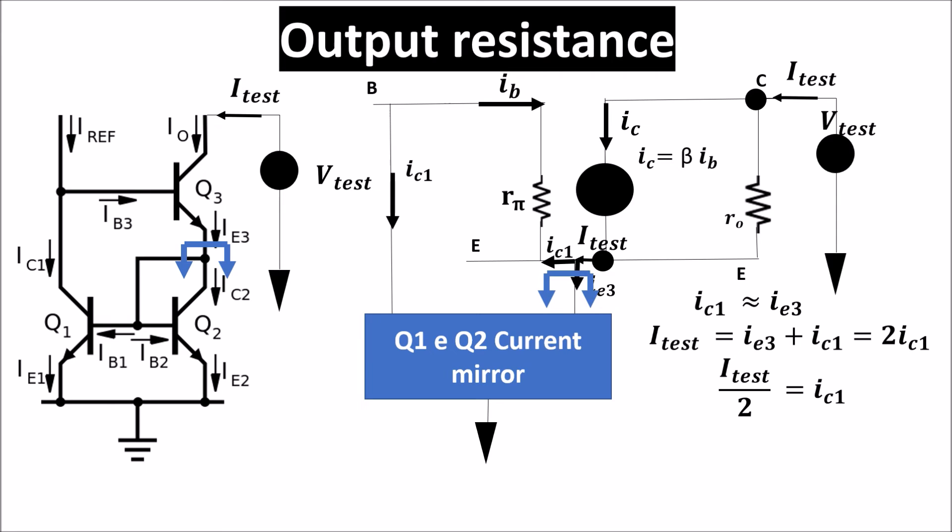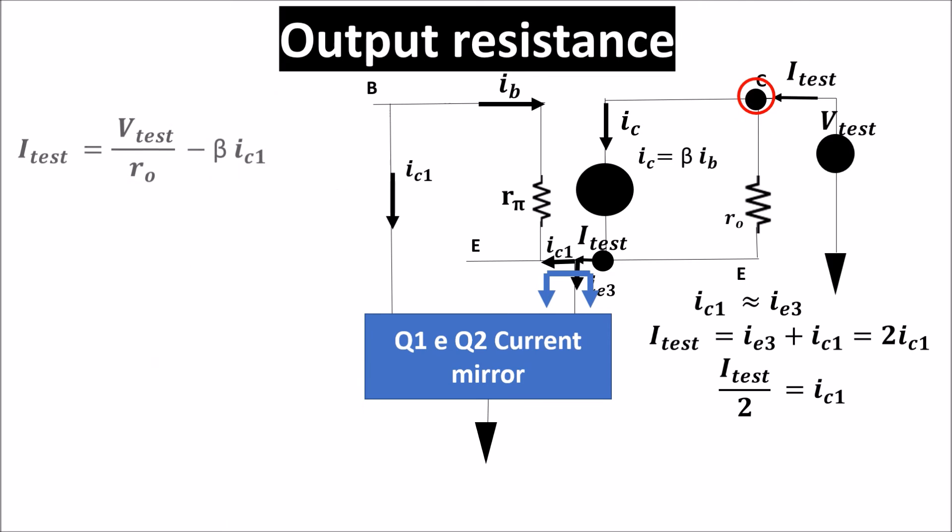So we can write the Kirchhoff current law to this node. ITest is equal to V test divided by little RO plus IB, but IB is equal to minus beta IC1.